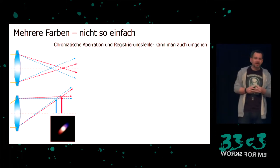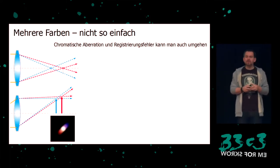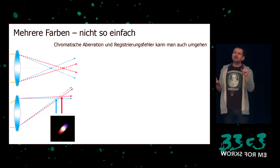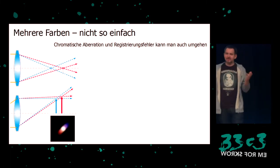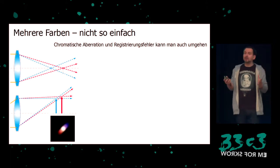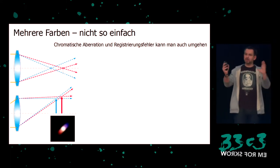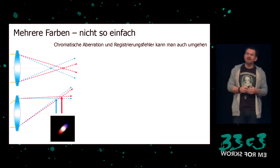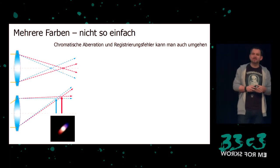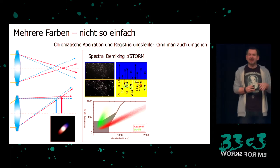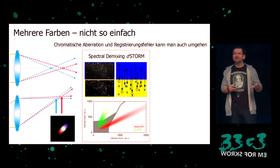If you want to do more colors, there are some problems. Chromatic aberration causes blur. If you use white light spanning from red to blue, it's smeared — that's chromatic aberration. Normally you have to correct that with registration: you take two pictures and try to make them match. But such registration is never perfect and there are bound to be errors. In my PhD thesis, I developed a technique called spectral D-STORM.